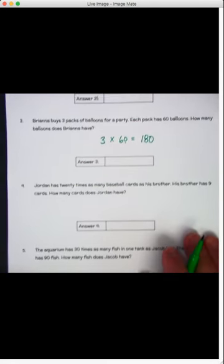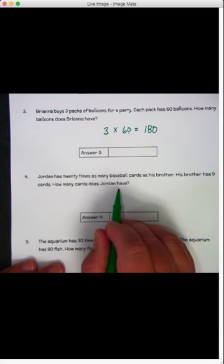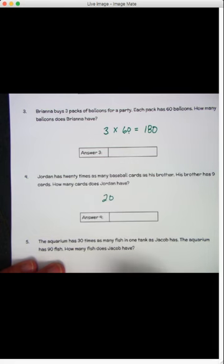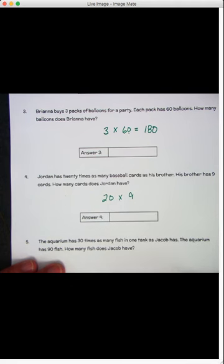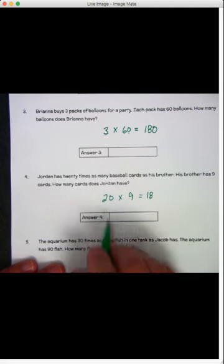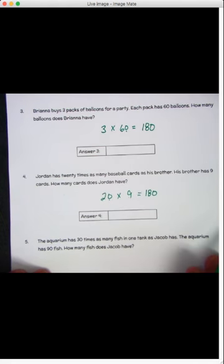Number 4. Jordan has 20 times as many baseball cards as his brother. His brother has 9 cards. How many does Jordan have? So Jordan has 20 times as many as his brother. And his brother has 9. So he has 20 times 9 cards. 2 times 9 is 18. We have 1, 0 to add. So Jordan has 180 cards.